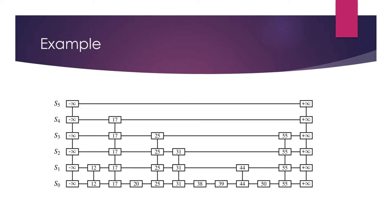This is an example of a skip list. We can see here there are six layers: S0, S1, S2, S3, S4, and S5, and the nodes are connected in ascending order. S5, the upper layer, is called the express lane, and S0, the lower layer, is called the normal lane. Insertion takes place after any number of layers in the skip list.